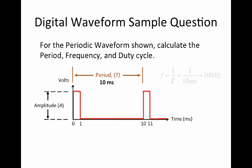Frequency is the reciprocal of the period, so frequency, F, is equal to 1 divided by T, which is 1 divided by 10 milliseconds, which gives you 100 hertz.